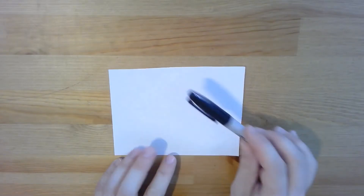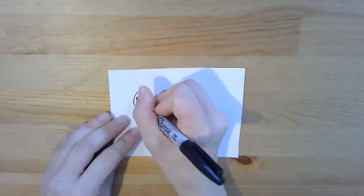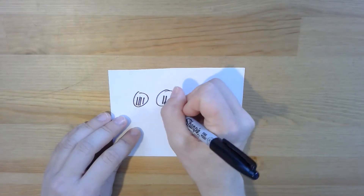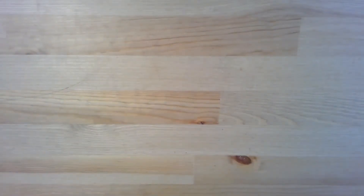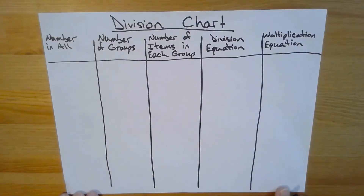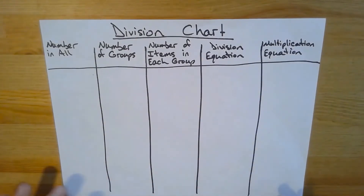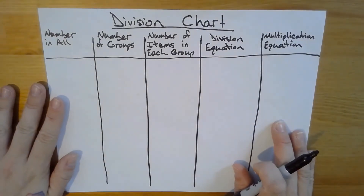It can be helpful to use models and manipulatives to solve sharing and grouping division problems, but we won't always have manipulatives that we can use. So today we're going to practice drawing circles and making tally marks in order to solve division problems. Throughout the activity we're going to keep track of information in the division problems in a division chart. To get started we need to set up our division chart, and as you can see I already created mine, and I have my paper horizontal or sideways to make sure I can fit all the information onto it.